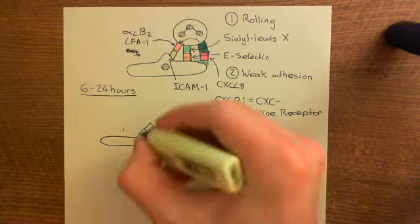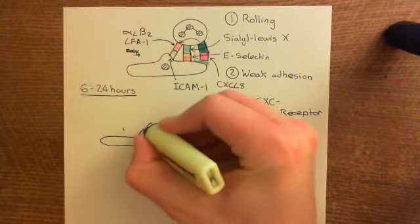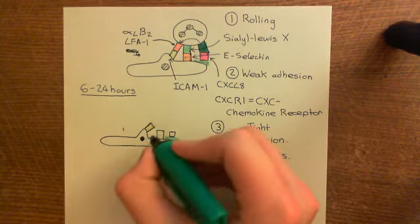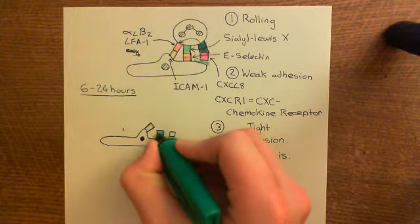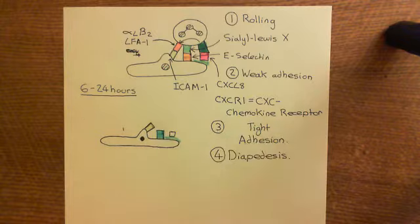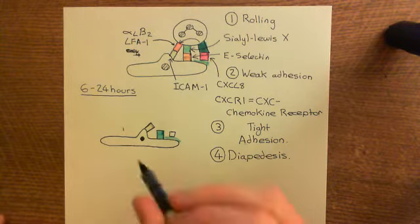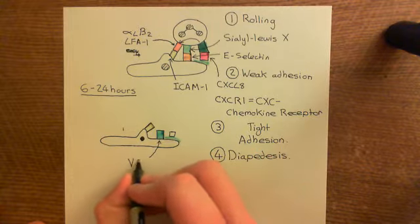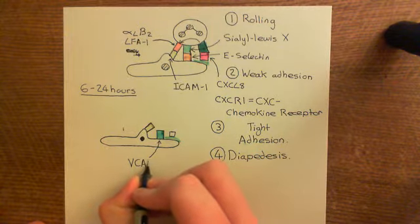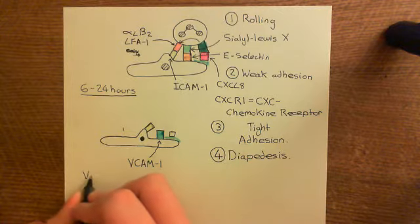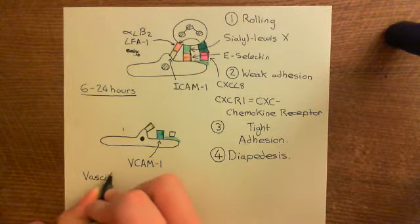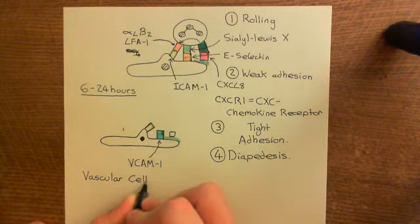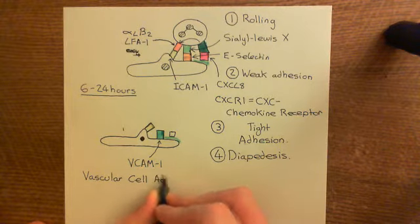ICAM1 stands for intercellular adhesion molecule 1. A new molecule here is VCAM1, which is within the immunoglobulin superfamily of cell adhesion molecules. VCAM1 stands for vascular cell adhesion molecule 1.